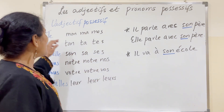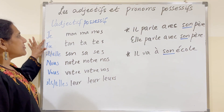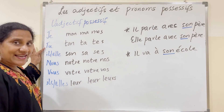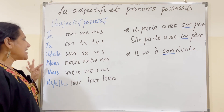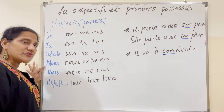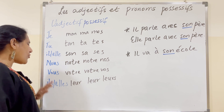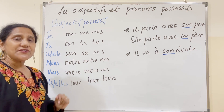Possessive adjectives are according to the subject pronoun: mon/ma/mes, ton/ta/tes, son/sa/ses, notre/nos, votre/vos, and leur/leurs.